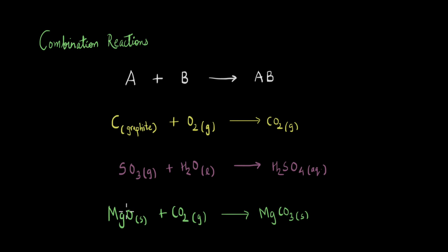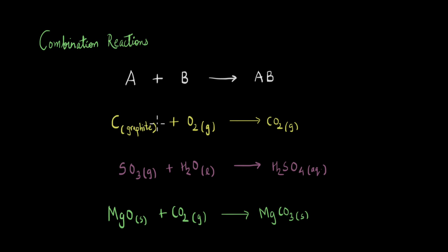Another example is the reaction of magnesium oxide with carbon dioxide to form magnesium carbonate. You can see how magnesium oxide and carbon dioxide combine to form magnesium carbonate. One thing usually observed in combination reactions is that because reactants combine to form the product, new bonds are formed between the reactants, and when new bonds are formed energy is released. So usually combination reactions are exothermic in nature.